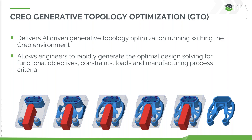GTO runs on your desktop inside your Creo session and delivers topology optimization within your Creo environment. It's designed for engineers to use to come up with the optimal solution based on constraints, objectives, loads, and manufacturing processes. You can see the progression example below, which we'll look at. This runs on your desktop as a normal part of your Creo session.